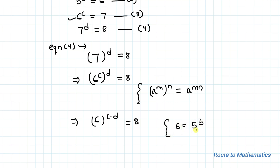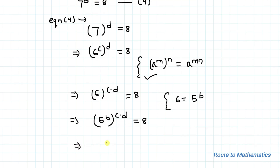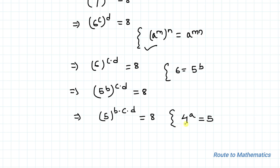From equation 2 we have 6 equals 5 to the power b. Let's substitute the value of 6, giving us 5 to the power b, whole to the power c times d, equals 8. Applying the same exponential rule — powers get multiplied — we get 5 to the power b times c times d equals 8.